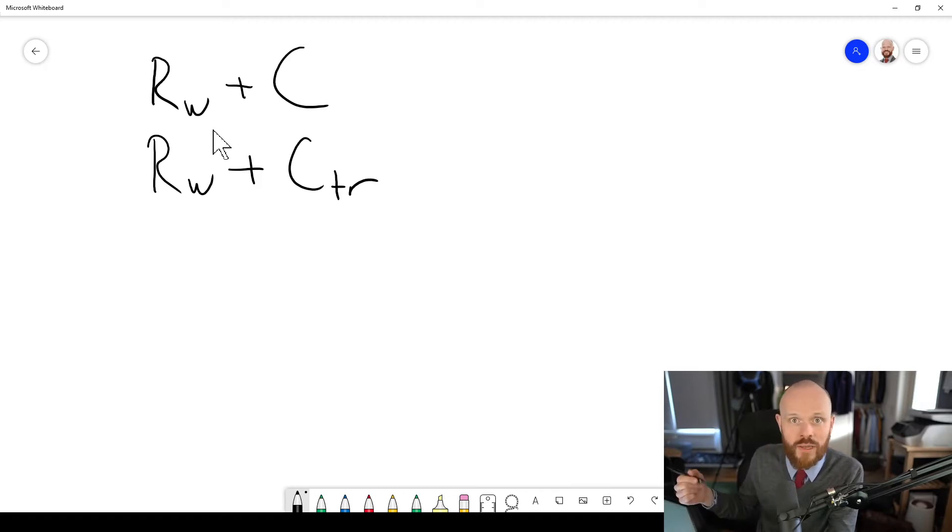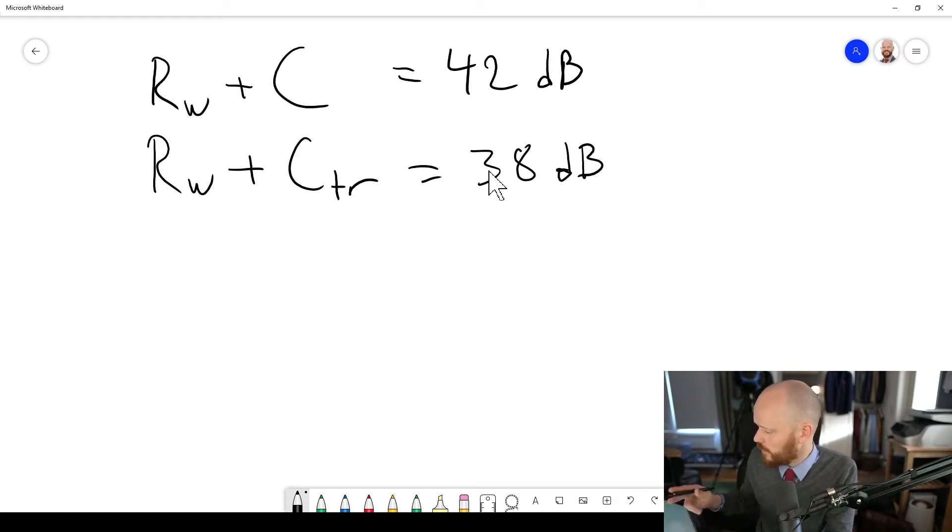So you will have a decibel rating. It could be perhaps that you have 42 on this one, and now I'm just winging some values here, and let's say it's 38. So this could be one and the same window that we're looking at, but it has two different values. So why is this one higher and why is this one lower? Well, the difference between these two is that they put the emphasis on certain frequency regions.